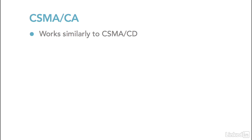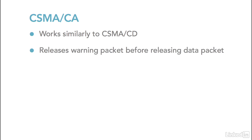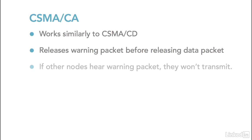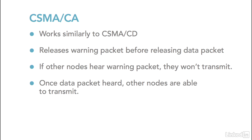The other contention method is CSMA/CA, which works very similarly to CSMA/CD. The main difference is that instead of releasing the data packet directly when the network is clear, it first releases a warning packet onto the network. That warning packet runs down the network and warns all other nodes that a data packet is about to be transmitted. When the other nodes hear the warning packet, they won't transmit until after they hear the data packet go by, at which point they'll attempt to transmit their own warning packet before their data packet.